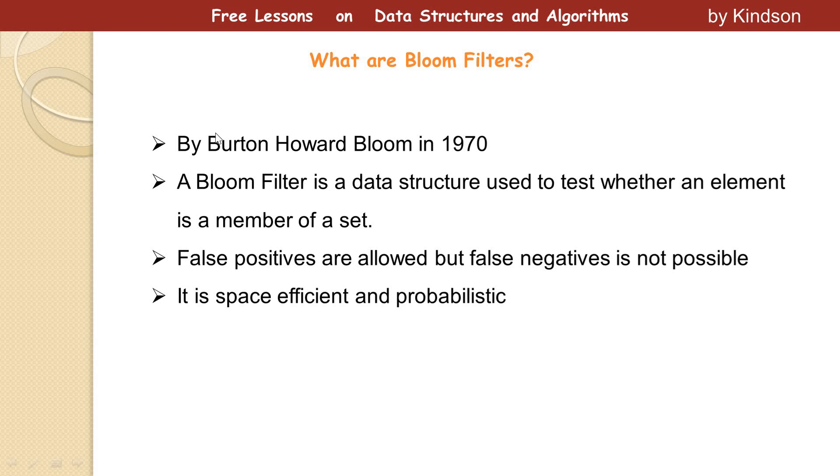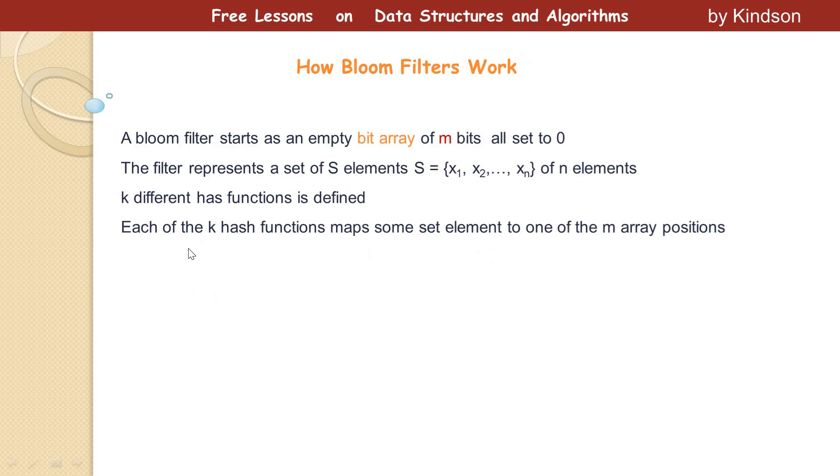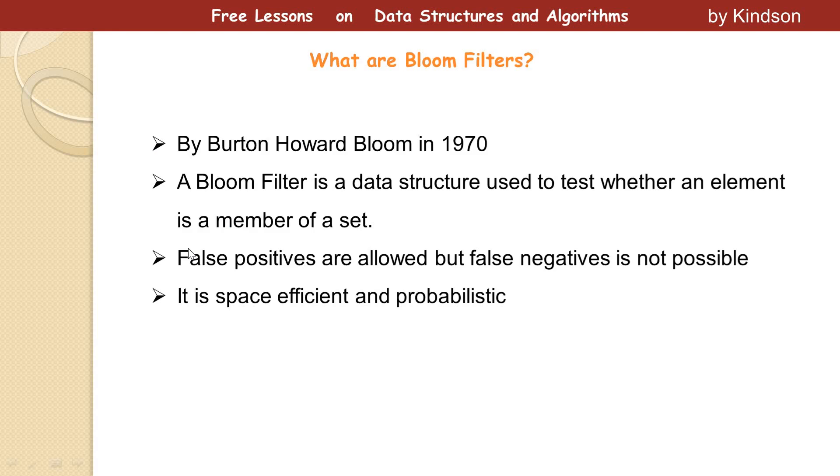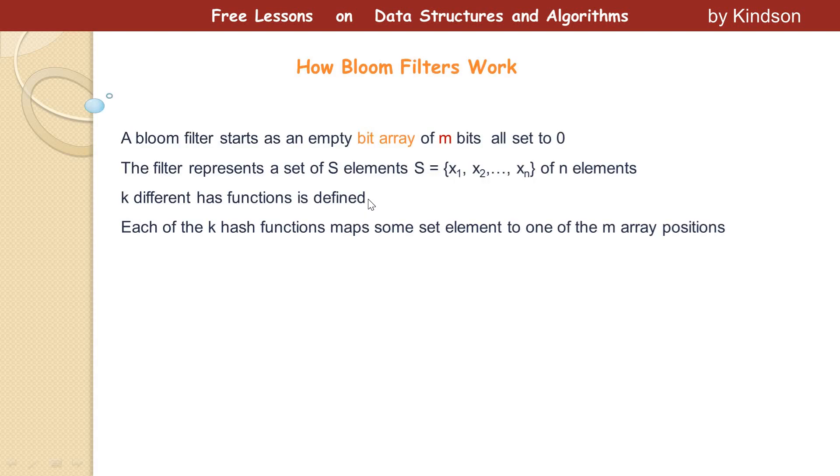So in Bloom Filters, false negatives is not possible, but false positives may be allowed. But the probability of false positives has to be very, very small. Another thing about Bloom Filters, it is space efficient and probabilistic. So these are the four points I just want to outline to make you understand the basics. Basically Bloom Filter is a data structure, but not a hash table. But it has to do with hash tables as we are going to see in the next slide.